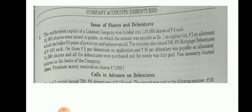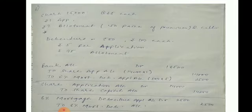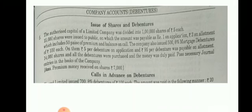The company also issued 500 mortgage debentures of ₹100 each. On these, ₹5 per debenture was payable on application and ₹95 on allotment. 14,000 shares and all 500 debentures were subscribed and money was duly paid. Pass the journal entries in the books of the company.